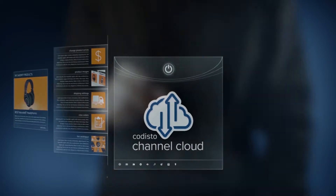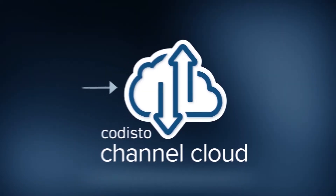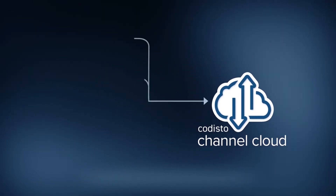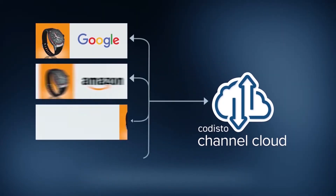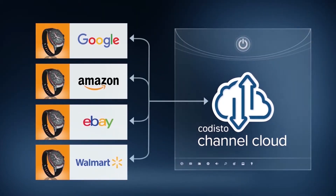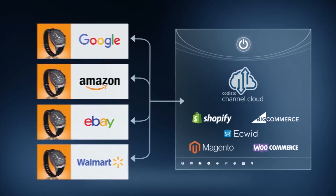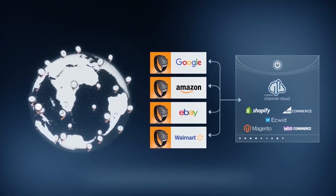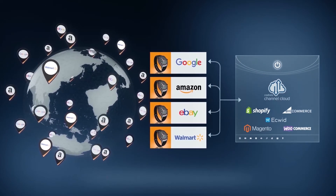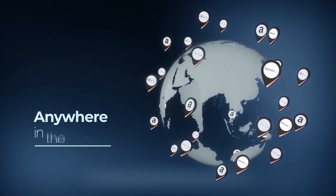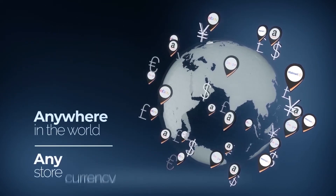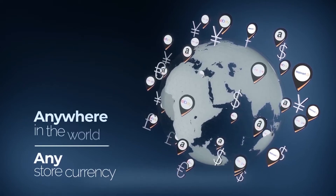Cadisto Channel Cloud makes it easy for you to sell on Google, Amazon, eBay and Walmart directly from your online store. Connect to any site globally and sell anywhere in the world in any store currency.